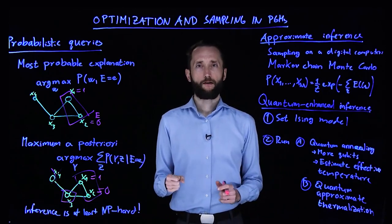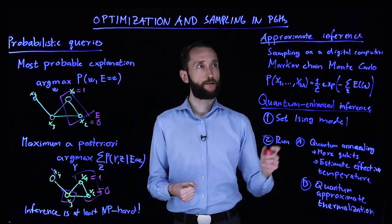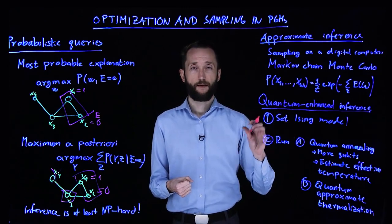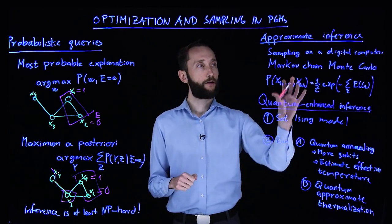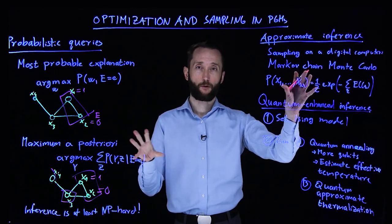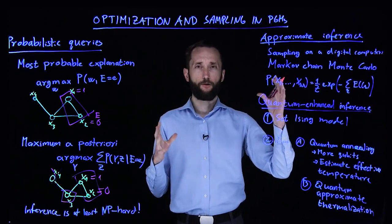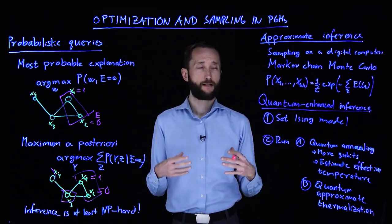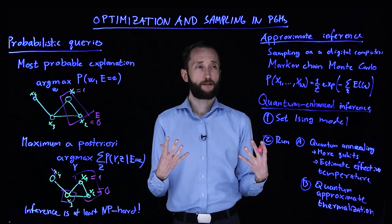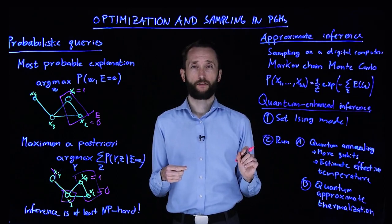So given that the problem is hard, there are a couple of ways of dealing with it. One way of dealing with it is using approximate inference. So instead of solving it accurately, you run some sampling over possible outcomes. And when you have a digital computer that's deterministic, you actually fake randomness and fake sampling from probability distribution by methods which are typically Markov chain Monte Carlo methods.